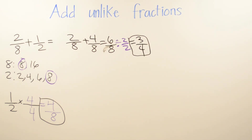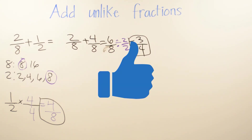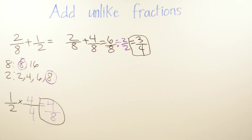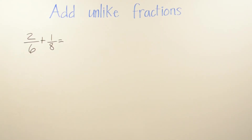If you think one of your friends is having trouble with adding unlike fractions, go ahead and share the video with them. Don't forget to hit like and subscribe. Stay to the end of the video where I'll show you how to turn a fraction into a mixed number. In this next example we have two-sixths plus one-eighth. If you're still having trouble, go back to the previous three examples and go over them as many times as you need.